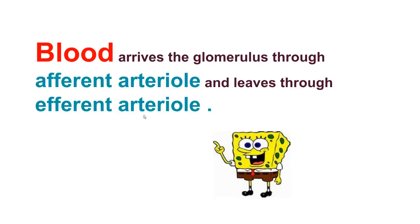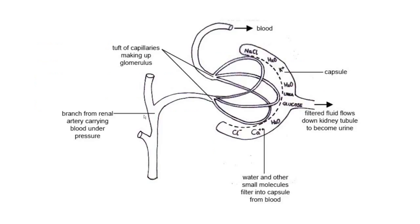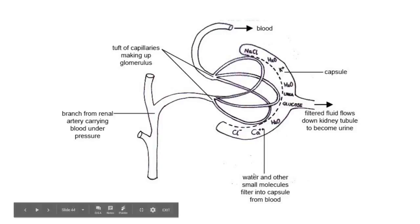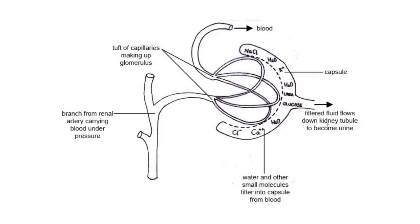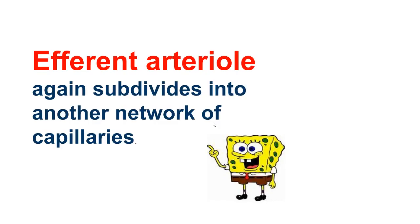Diagrammatically, this is the Bowman's capsule and this is the ball of capillaries known as the glomerulus. This arteriole carries blood towards the glomerulus, and this one takes it away. Arrows indicate water and other small molecules filtering into the capsule from the blood, and the filtered fluid flows down the kidney to become urine.